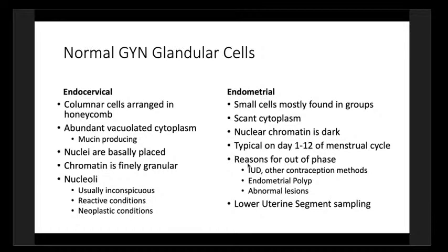For endometrial cells, these are mostly found in groups. The cytoplasm is very scant — they are cuboidal. The chromatin is very dark. We typically see them on days 1 to 12 of the menstrual cycle. Reasons they might appear after day 12 include IUD or other contraceptive methods, endometrial polyps, or abnormal cells. With newer collection techniques, we sometimes see lower uterine segment sampling, where abraded endometrial cells come off in large flat sheets.